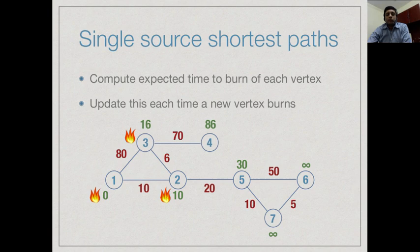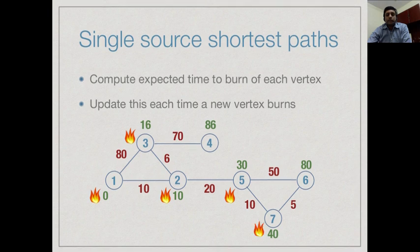When vertex 5 burns, we update its neighbors: vertex 6 gets 80 and vertex 7 gets 40. Vertex 7 burns next, and we replace the cost at vertex 6 from 80 to 45. Then vertex 6 burns at t=45. Finally, vertex 4 burns at t=86.